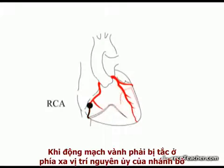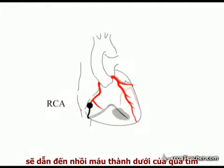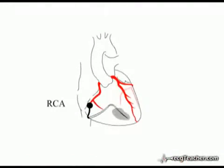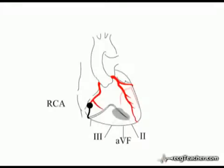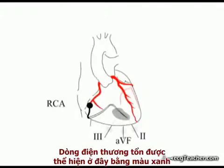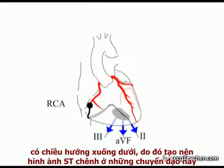Blockage of the RCA distal to the origin of the marginal branch infarcts the inferior surface of the heart. This inferior surface is examined by leads 2, 3 and AVF. In inferior infarction, the injury current represented here by the blue arrows therefore produces ST elevation in these leads.